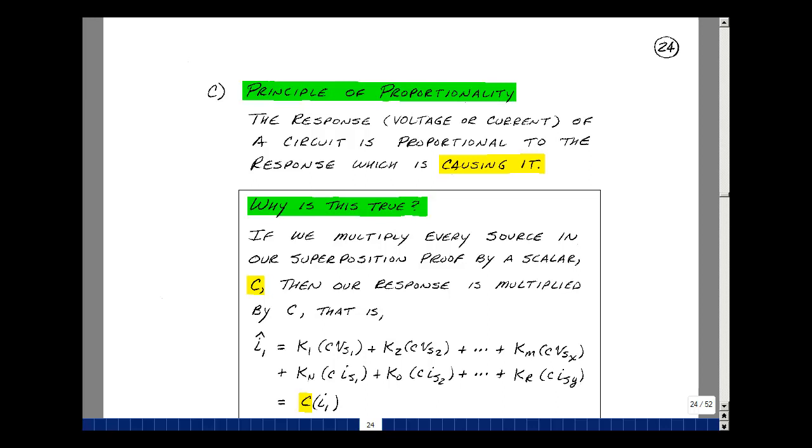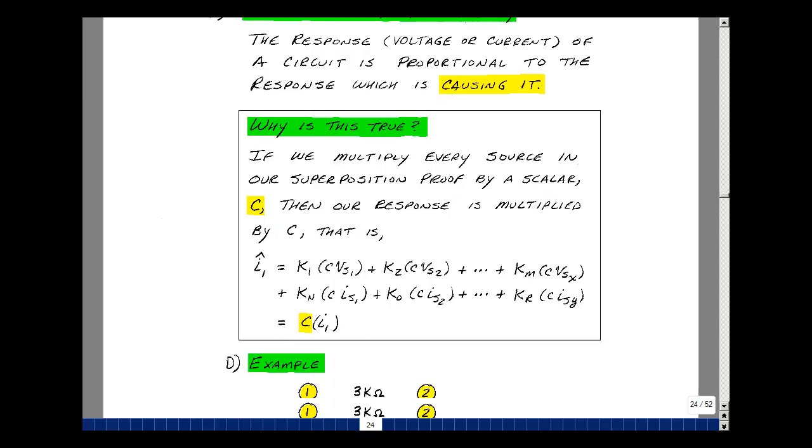Now, why is this true? Well, if we multiply every source in our superposition proof by a scalar, say it's C, then we have the following for the current. I'll call this I1 hat, where I1 was our result in the superposition proof, taking every source and multiplying it by a scalar. We had X voltage sources and Y current sources, but each one of these is multiplied by the same scalar. So you could pull that out, and what's left over is our definition of I1.